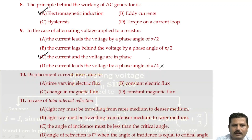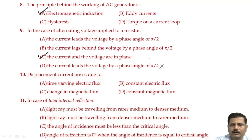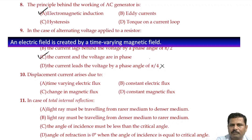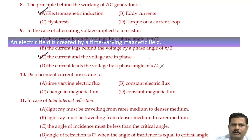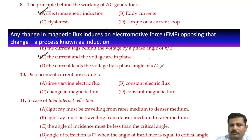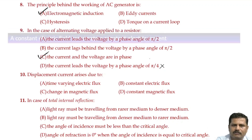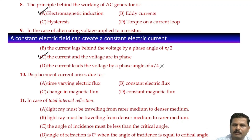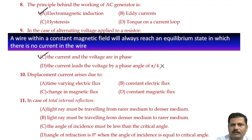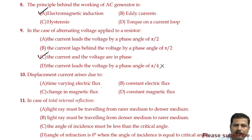Displacement current arises due to. A time-varying electric field creates effects analogous to current. A constant electric field creates a constant electric current, and a wire in a constant magnetic field reaches equilibrium with no current. Our option is that displacement current arises due to a time-varying electric flux. Option A is the right answer.